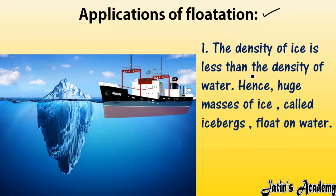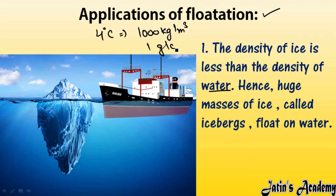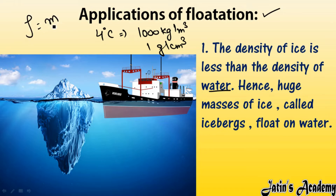The density of ice is less than the density of water. The density of water is at 4 degrees Celsius, that is 1000 kg per meter cube, or 1 gram per centimeter cube. But the density of this large mass of ice — this iceberg — is less compared to water. You can see the volume of this iceberg is very high. If volume is high, we know the formula: density equals mass divided by volume, so if volume is more, density is less.